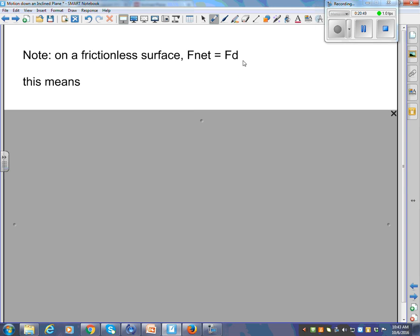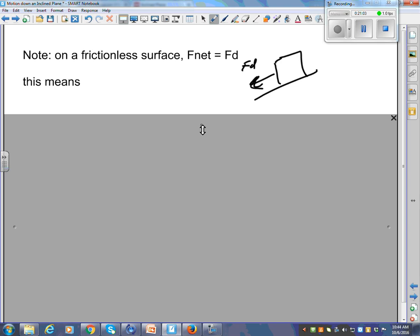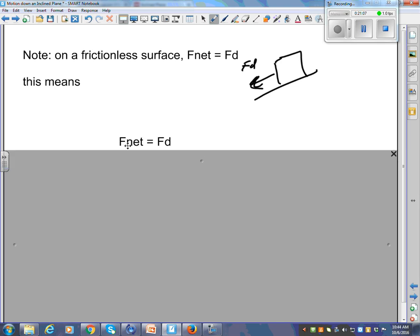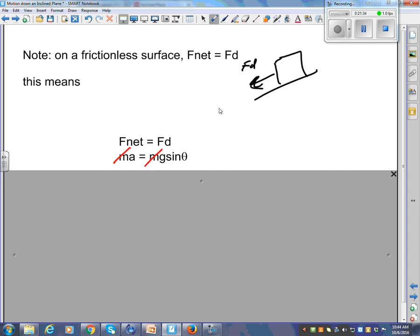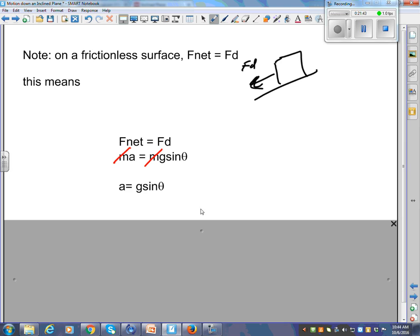Note on a frictionless surface, is this true? F net is equal to Fd on a frictionless surface. So this means, let's put our two formulas together here and see what shakes out. Would you agree F net is equal to Fd? What is F net equal to? M times A. What's Fd equal to? mg sine theta. Your spider senses should be tingling. What can we do? Can you do that, cancel mass on both sides? So A equals g sine theta, only on a frictionless surface.